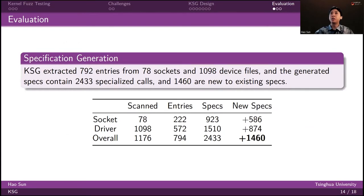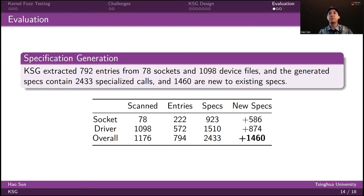For evaluation, we executed KSG on multiple versions of the Linux kernel. KSG is able to extract 792 entries from 78 sockets and 1,098 device files. All the generated specifications contain almost 2,433 specialized system calls, and 1,416 are new to existing specifications. This table shows the detailed information of the extracted entries and the specifications generated from those entries.